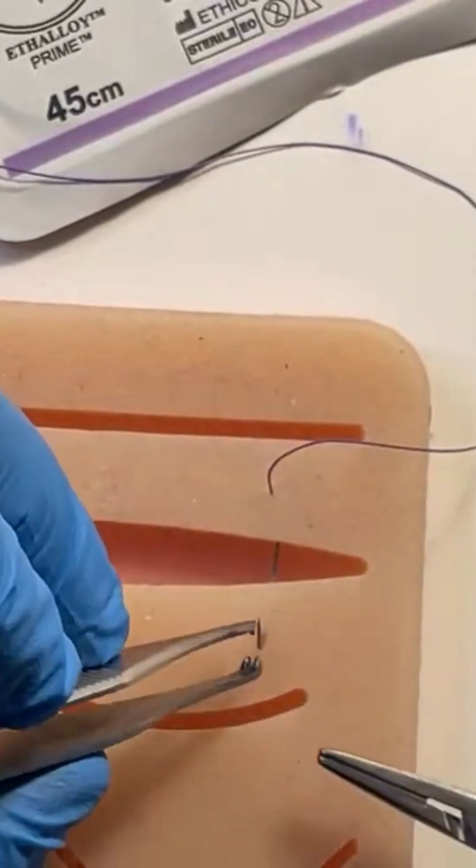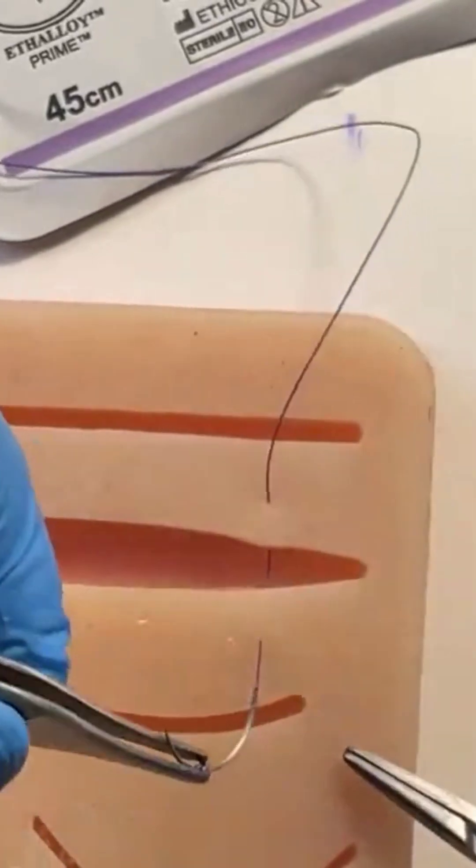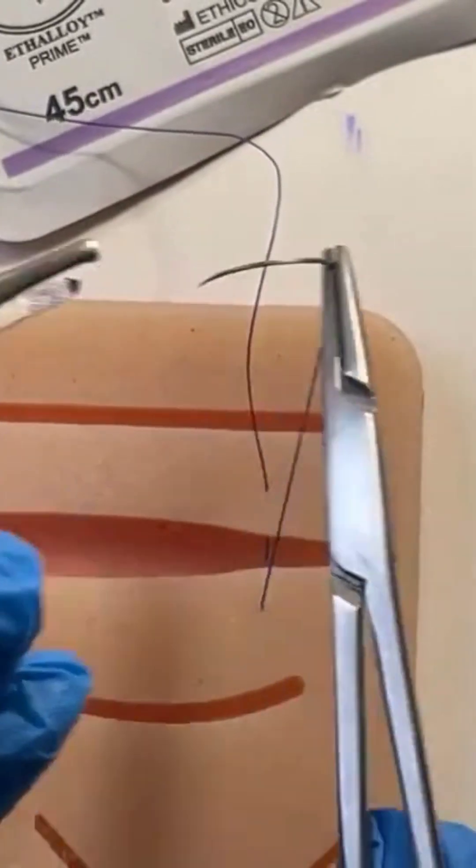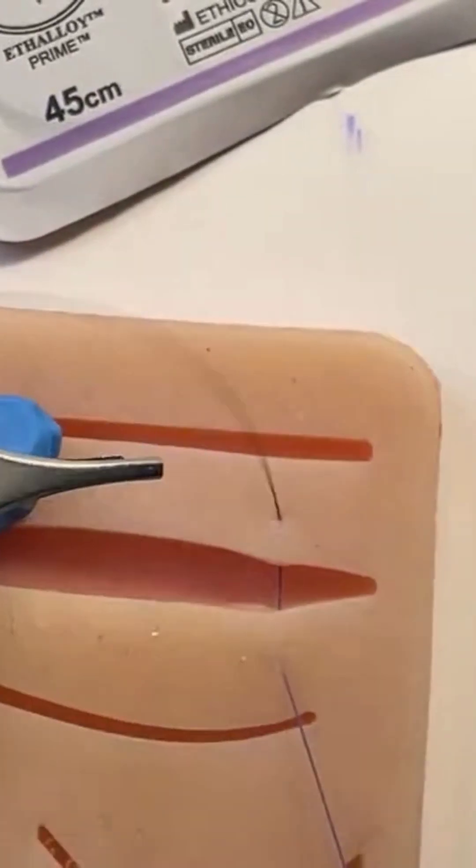You go in. You turn the needle around by showing yourself the bottom part, mounting it straight away. Pull your suture through.